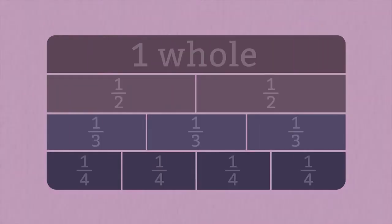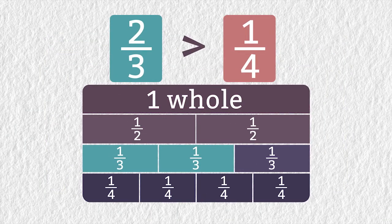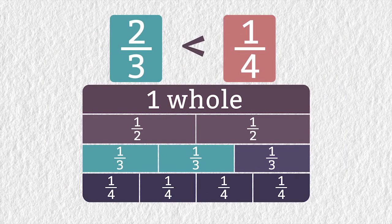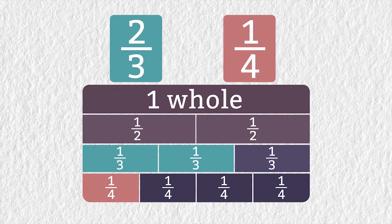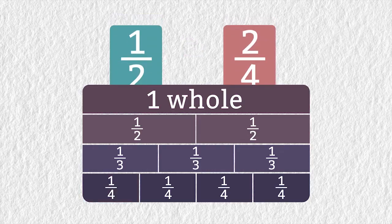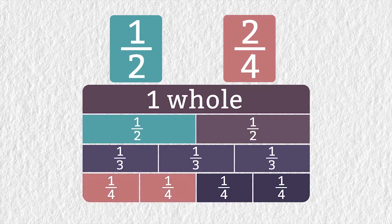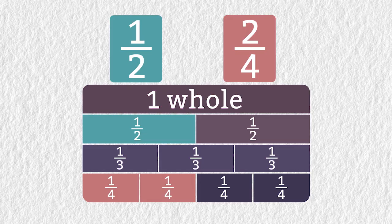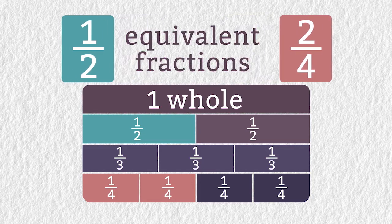A great way to compare fractions is by using fraction strips. Is 2 thirds greater than, less than, or equal to 1 fourth? 2 thirds is greater than 1 fourth. Which is greater, 1 half or 2 fourths? 1 half and 2 fourths are equal, so they are called equivalent fractions.